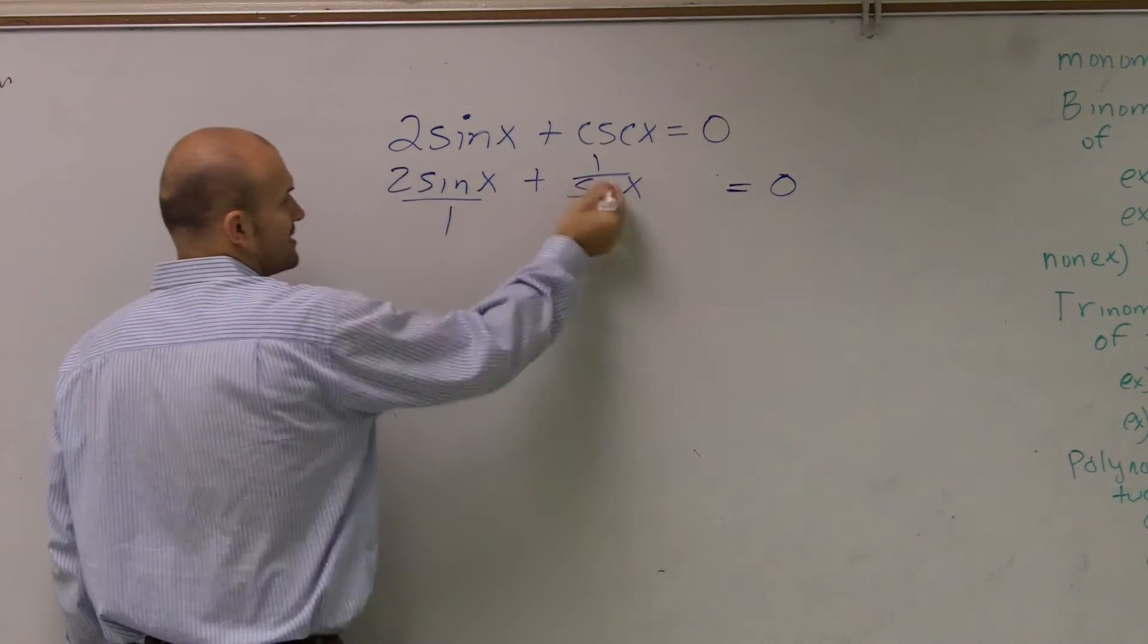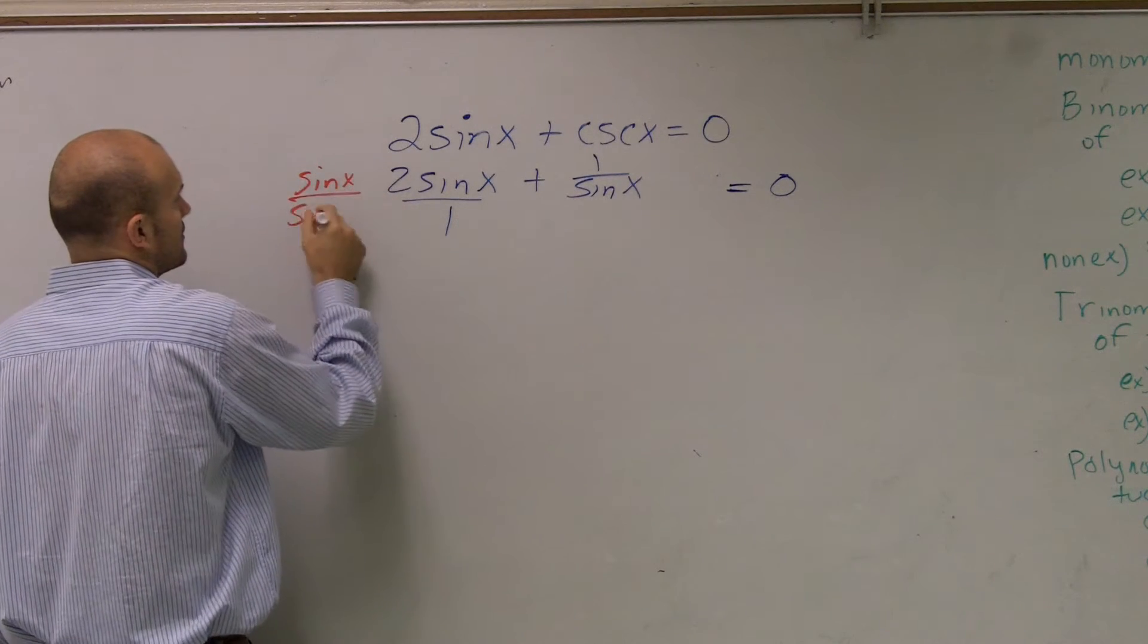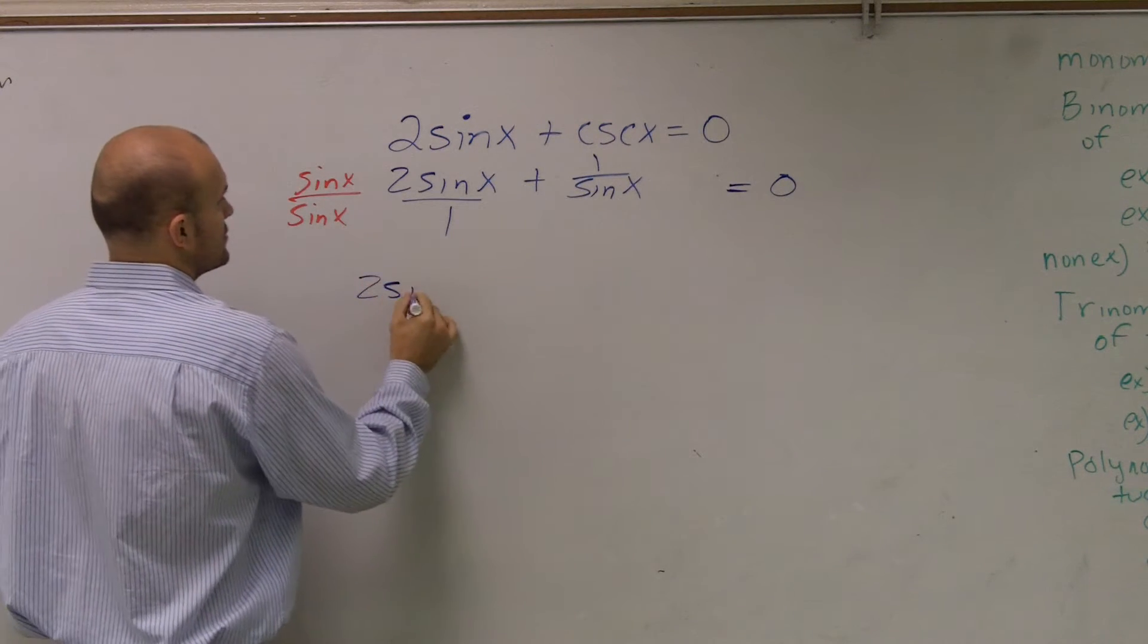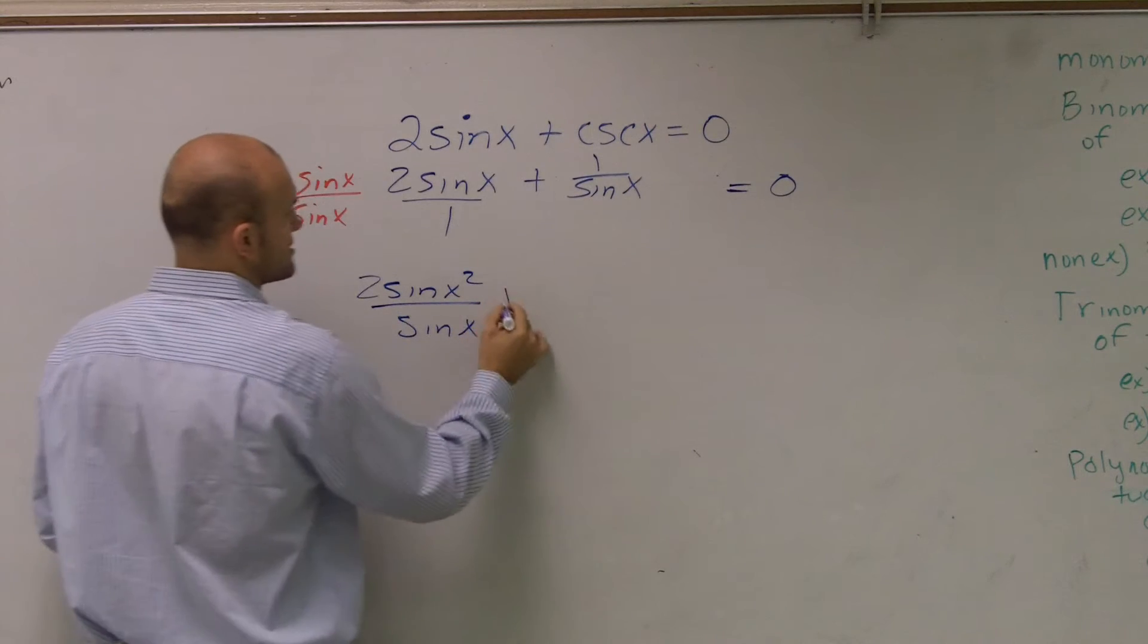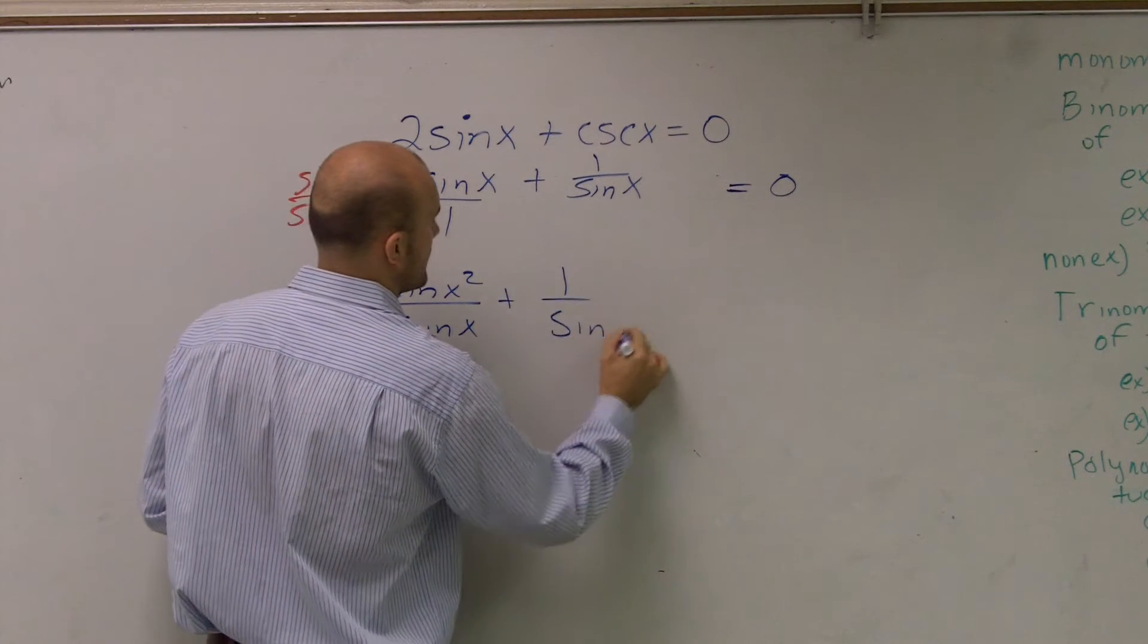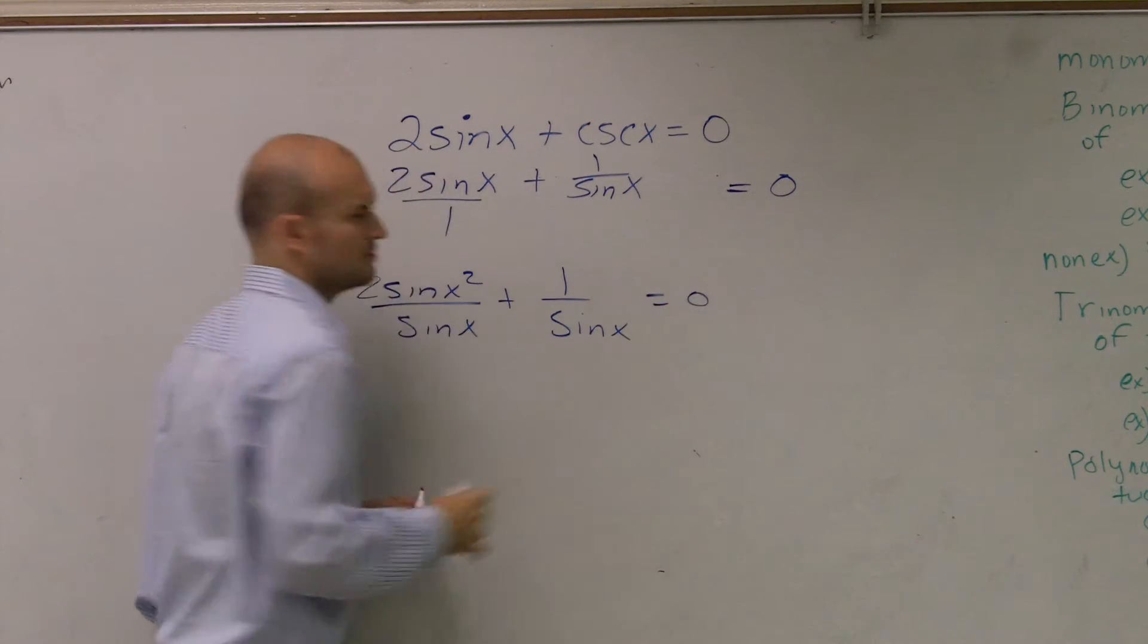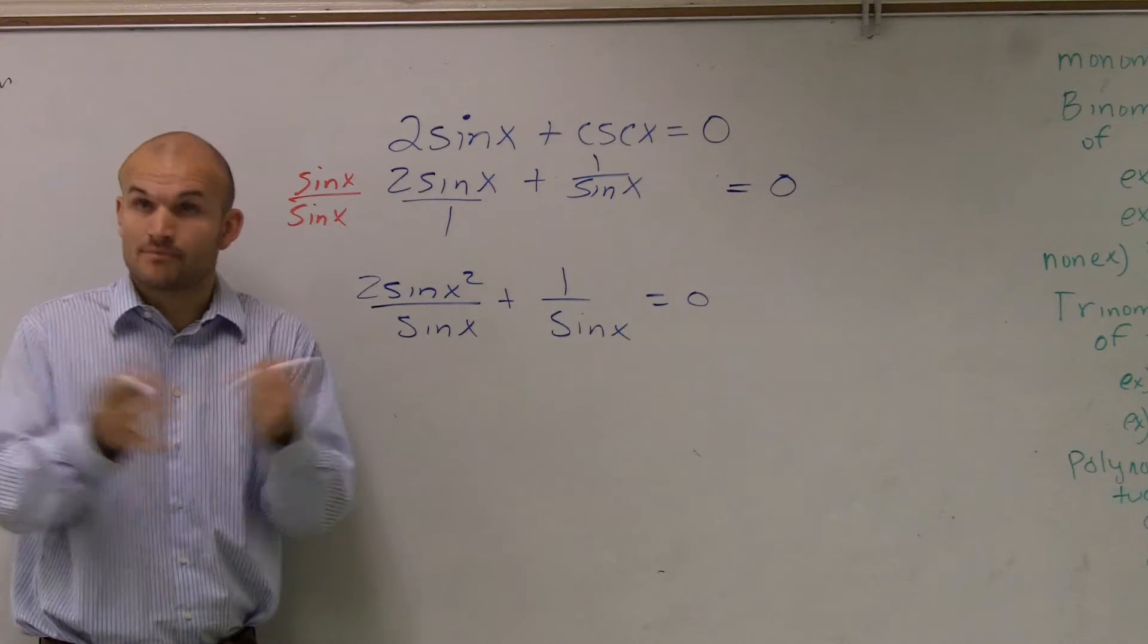Let's get them to have the same denominator, so I'll multiply by sine of x over sine of x, right? So therefore, I get 2 sine of x squared over sine of x plus 1 over sine of x equals 0. Does everybody follow me, what I did? Now they have the same denominator. Now I can combine them.